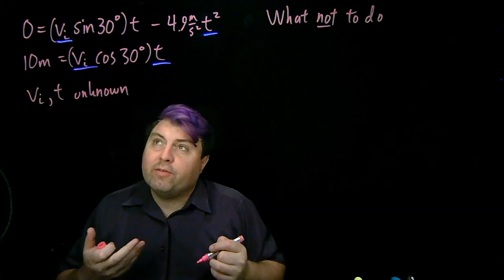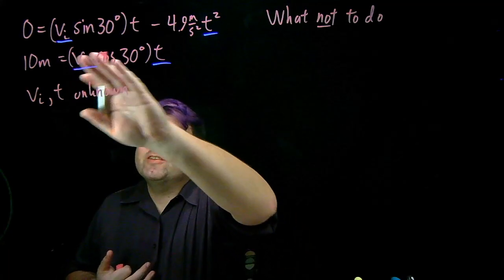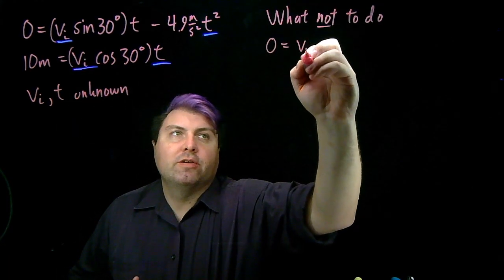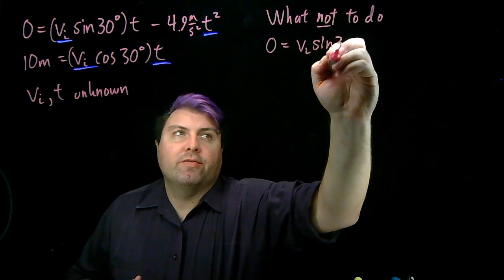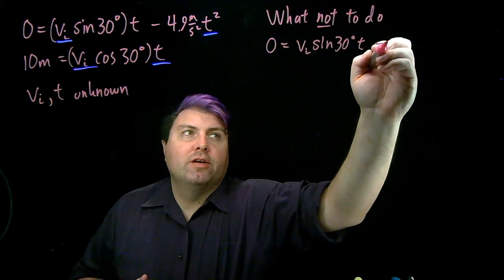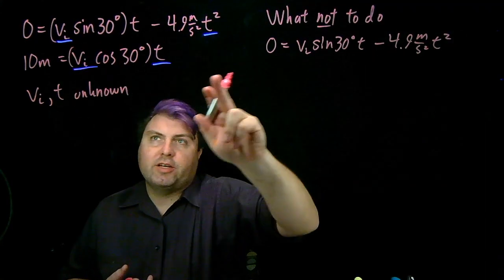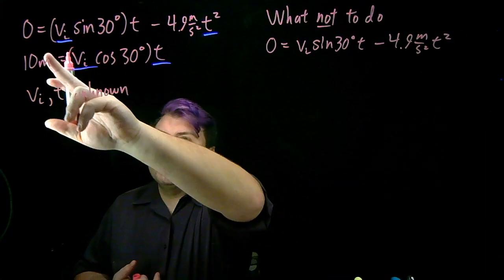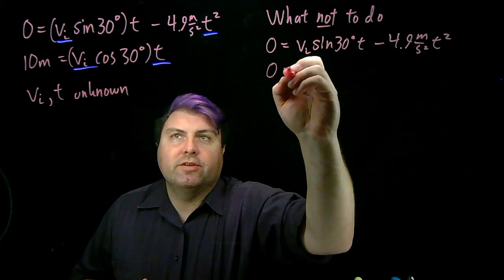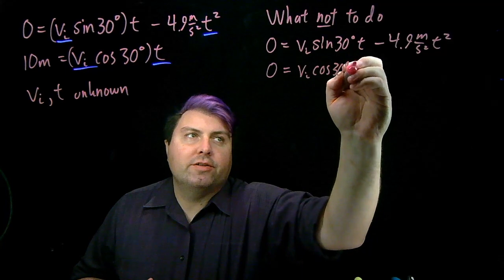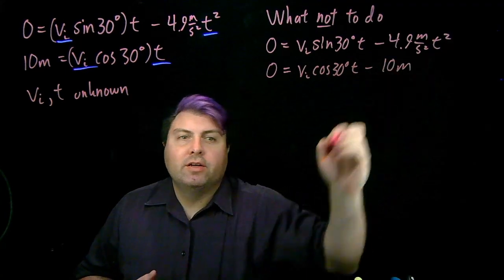So one thing that we could do, and we shouldn't, is to set both sides equal to zero. So we have 0 = vi sin 30° t - 4.9 m/s² t². We haven't done anything to the top one. For this bottom one, we just bring this 10 meters over. So now we have 0 = vi cos 30° t - 10m.